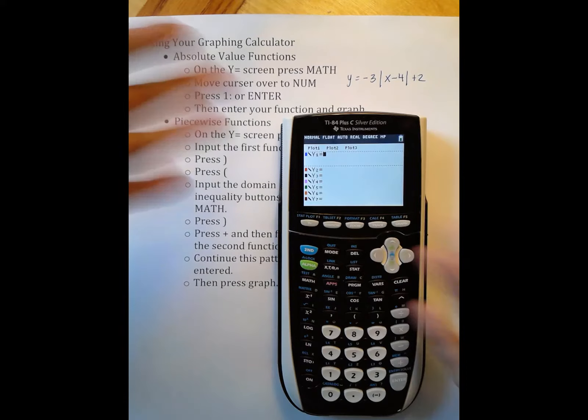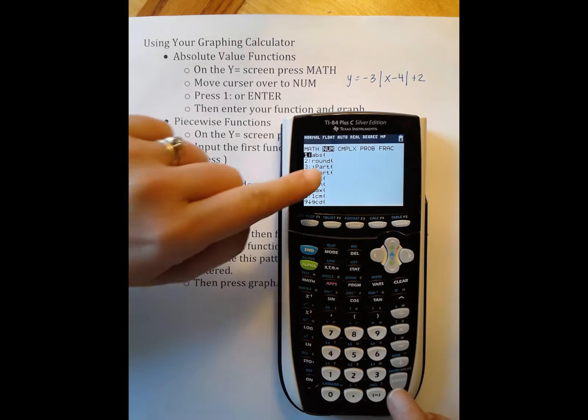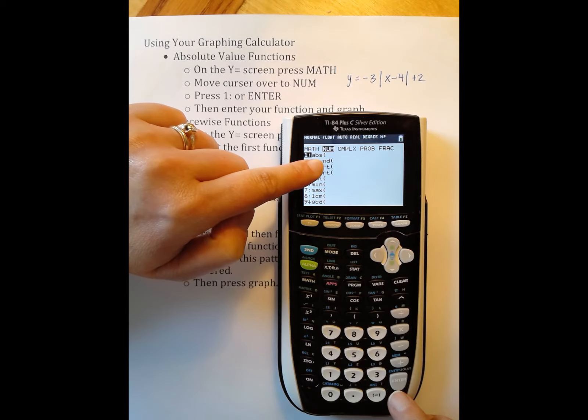I start filling it in just as it says, so y equals negative 3, but now I need the absolute value symbol. In order to find that on your calculator, you press math and you scroll over to num. Right there, the very first one is highlighted already for you, abs parentheses.